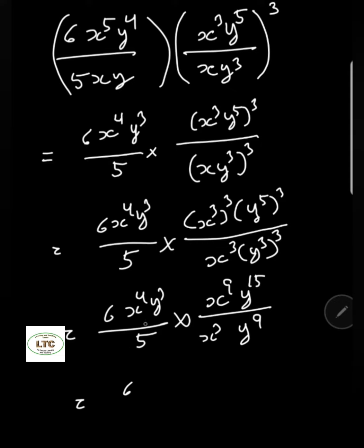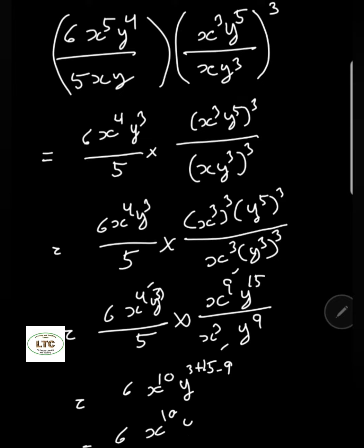Above you get 6, and you see x to the power of 4 and x to the power of 9 above, and x to the power of 3 below. So x to the power of 3 will be cancelled and x to the power of 10 will be left. For y: y to the power of 3, y to the power of 5, and y to the power of 15 gives y to the power of 18, and y to the power of 9 cancels, leaving y to the power of 9. The answer is 6 times x to the power of 10 times y to the power of 9.